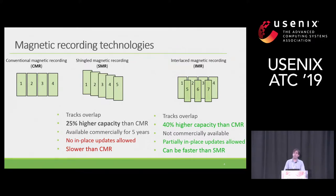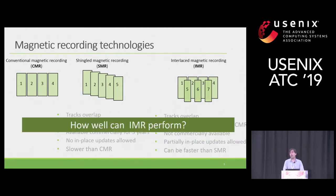Interlaced magnetic recording, the focus of this talk, is a state-of-the-art technology still in the experimental phase. It shares the same idea with SMR — overlapping tracks — but in a different fashion, as you can see in the figure. It offers about 40% increase in capacity compared to a conventional drive. The interesting thing about IMR is that it lifts some of the constraints SMR has to deal with. Here, only half of the tracks overlap, so performance should be better than a shingled drive. The main question is how close we can get to a conventional drive in terms of performance.